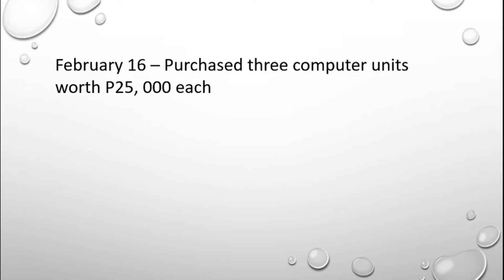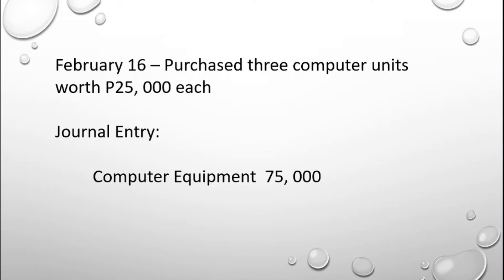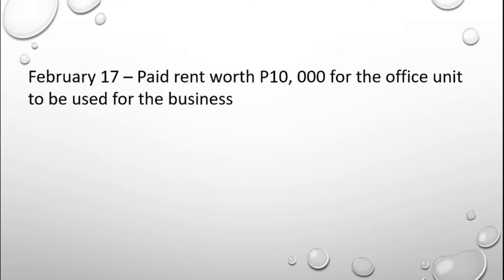On February 16, the business purchased three computer units worth ₱25,000 each. The journal entry is: debit Computer Equipment ₱75,000 and credit Cash ₱75,000. The amount is ₱75,000 because 3 units times ₱25,000 equals ₱75,000. Since the problem is silent on payment terms, we assume the computers were paid in cash directly.